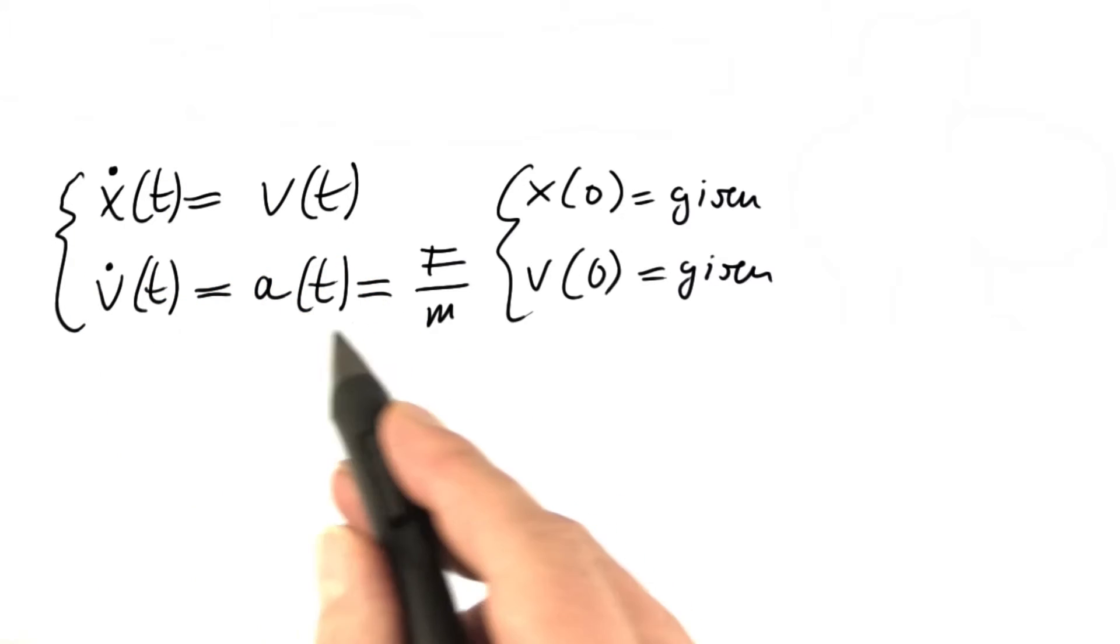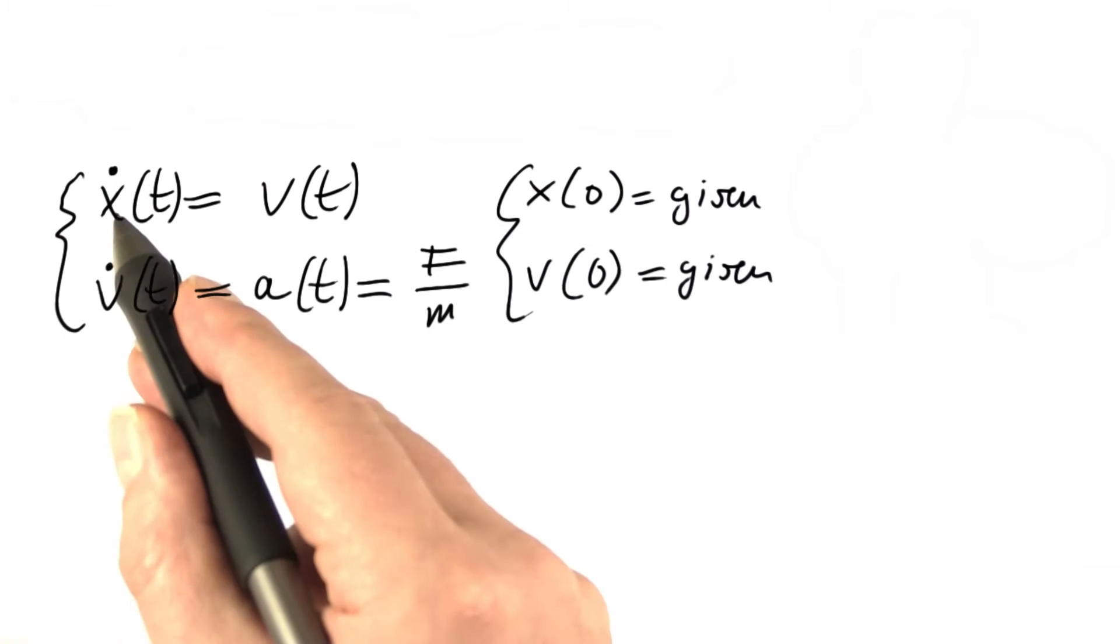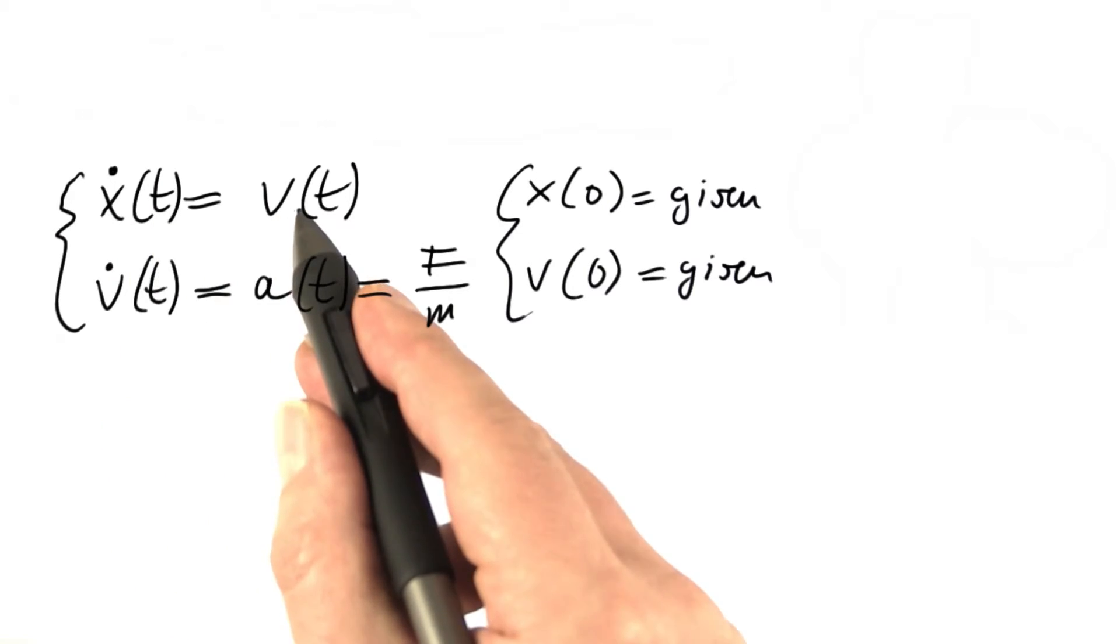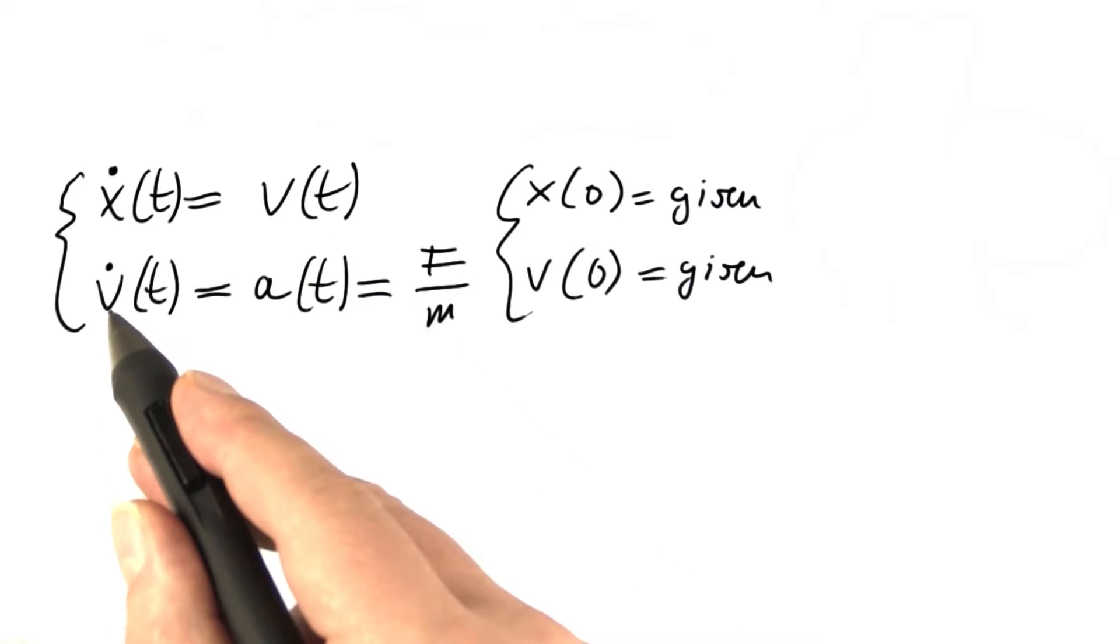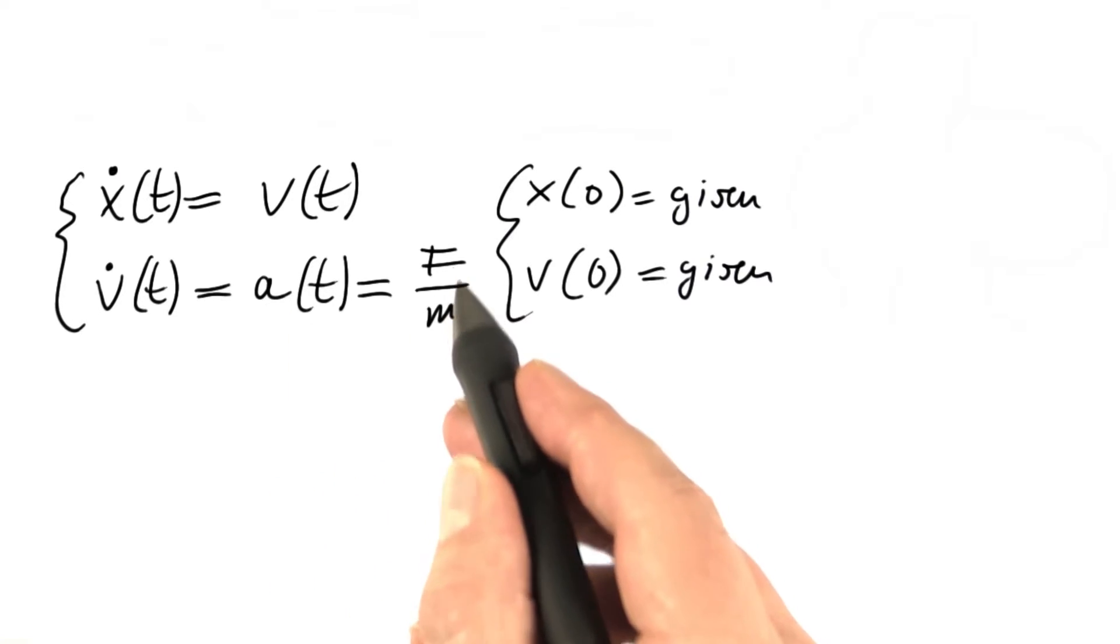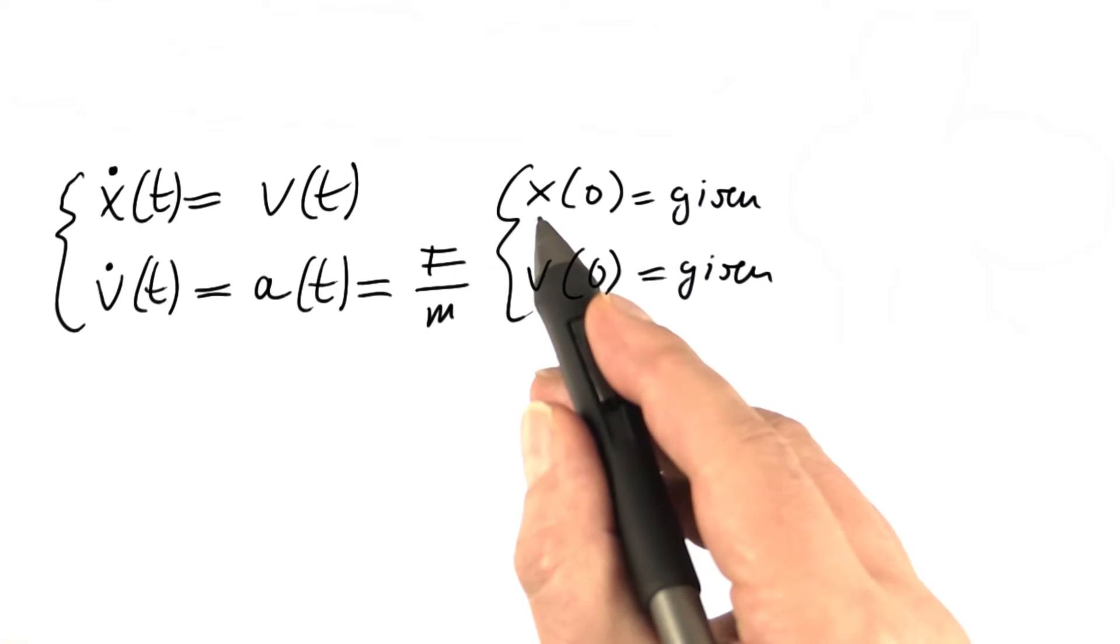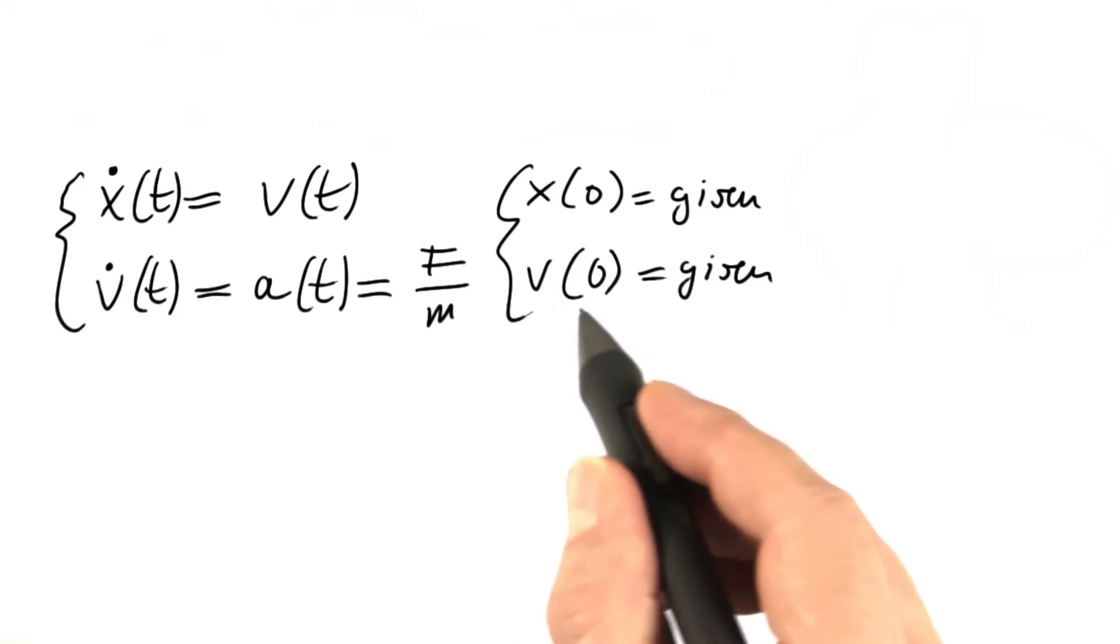So now we have equations that govern the rates of change of the position and the velocity. The rate of change of the position is the velocity, and the rate of change of the velocity is the acceleration, which is, by Newton's law, force divided by mass. And in a typical setting, we also know the position at time zero and the velocity at time zero.